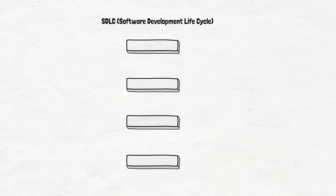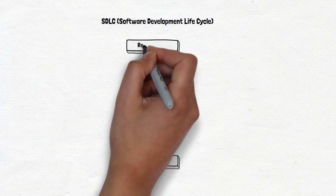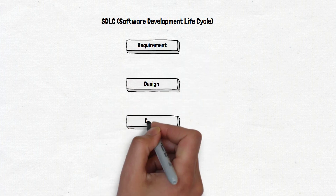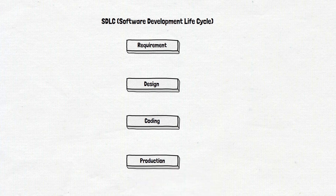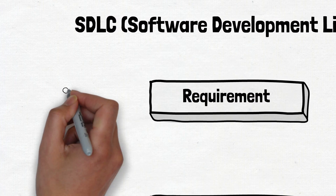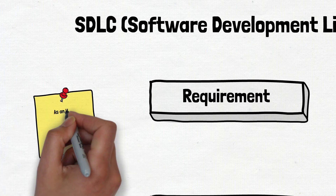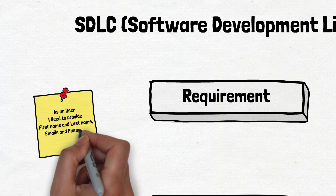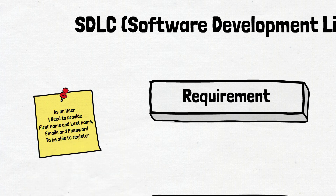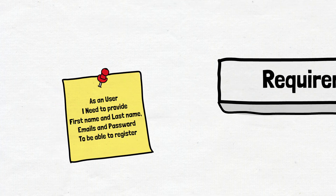It consists of four stages only: Requirement, Design, Coding, and Production. Let's check what happens in each of the stages. We start with the requirement phase. The product owner, business analyst or someone else writes the requirements. This user story is simple — it's about user registration, and the list of fields is provided in the scope of it.